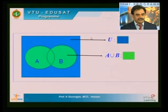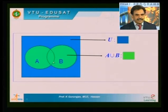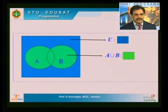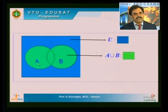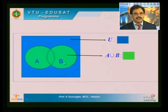In the Venn diagram, the rectangular region colored blue represents the universal set, the first circular region represents set A, and the second represents set B. To show A union B, you shade both A and B — this gives the set A union B.